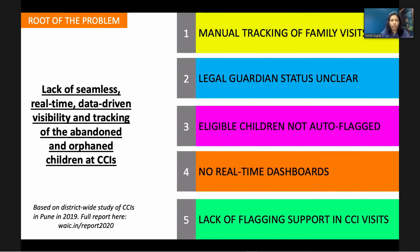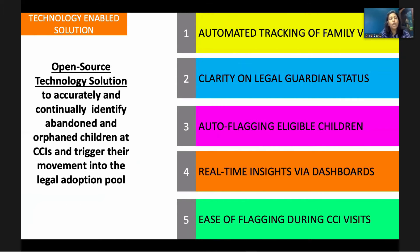The root of this problem is that there is a lack of real-time, data-driven visibility into the abandoned and orphaned children at child shelters. The indicators needed to identify these children — such as family contact, legal guardian status, etc. — are either manually tracked or the data is not collected clearly, which means eligible children cannot be auto-flagged, and local authorities do not get any real-time insights into the status of these children.